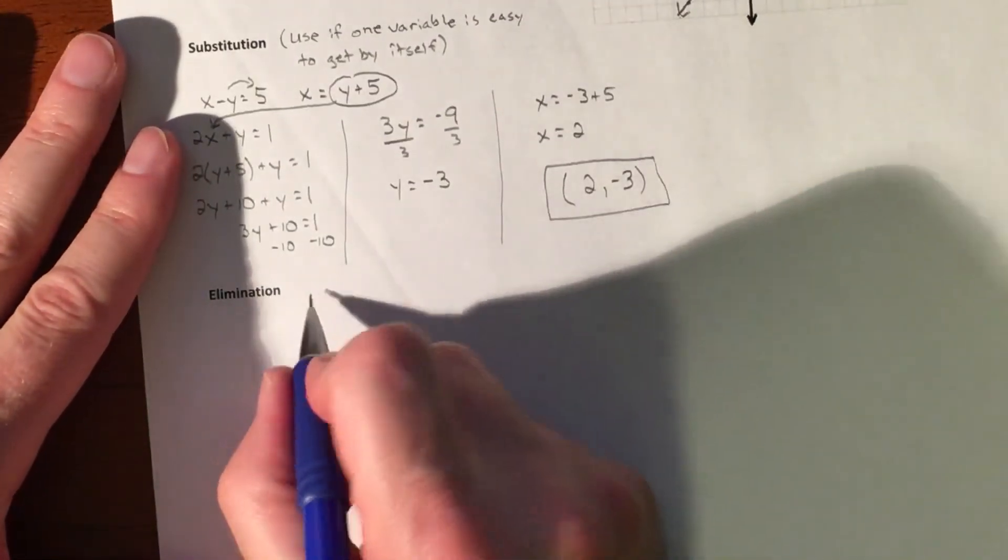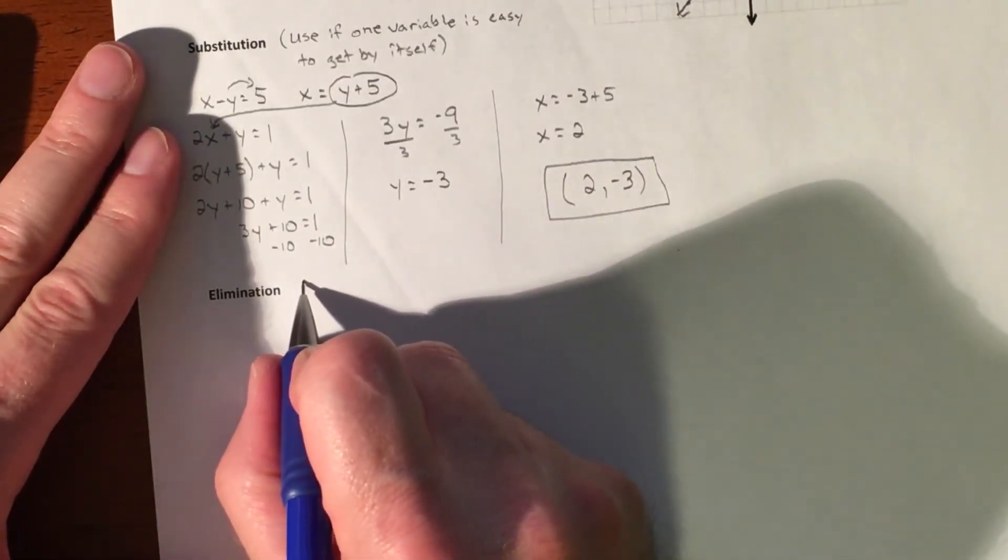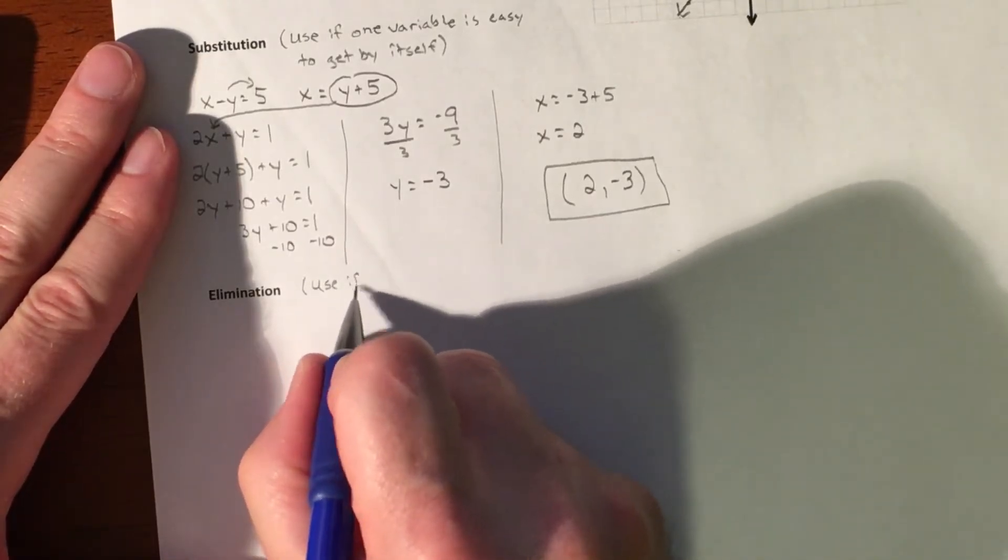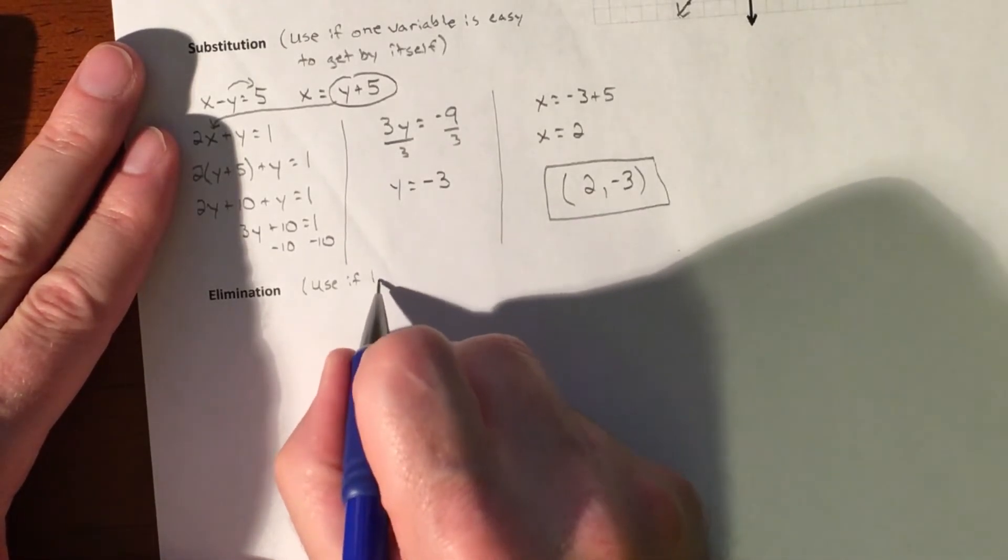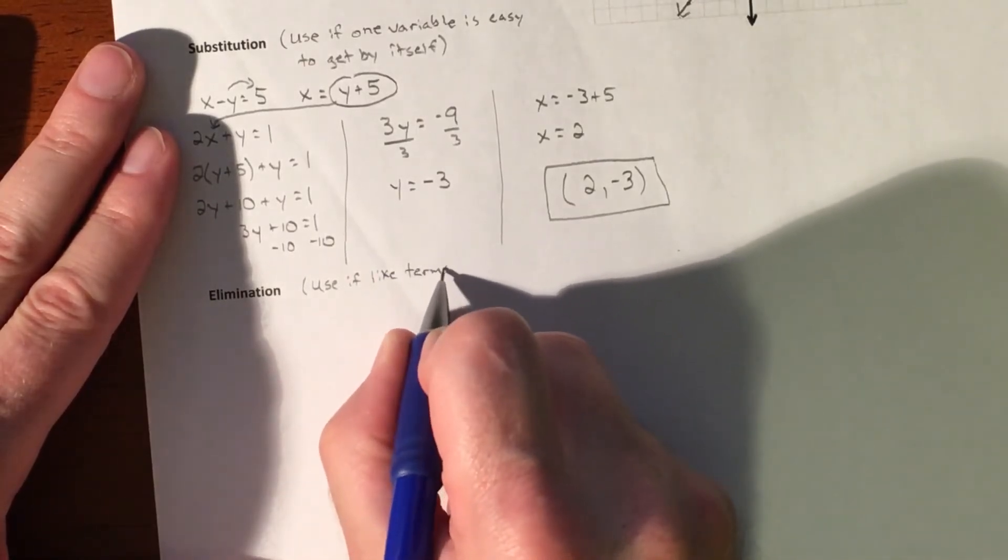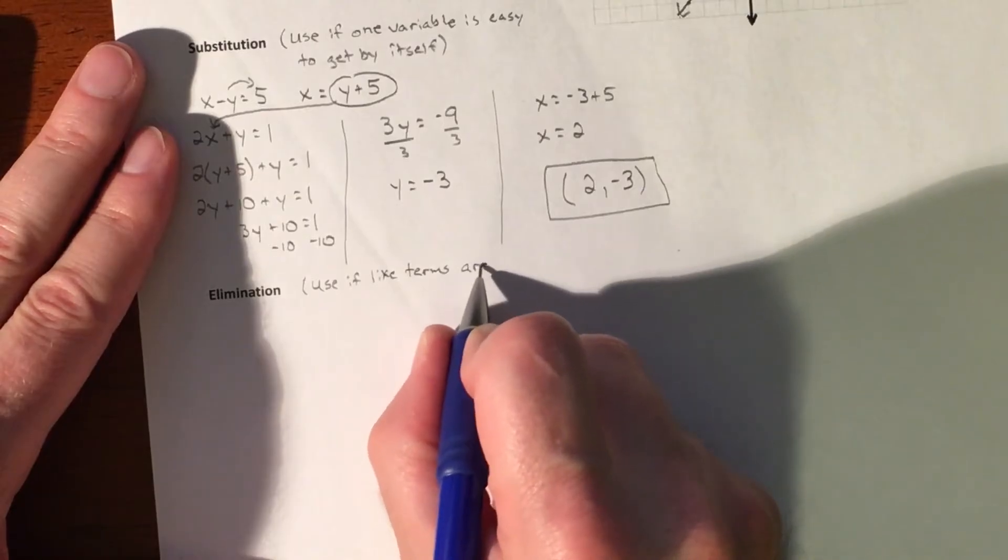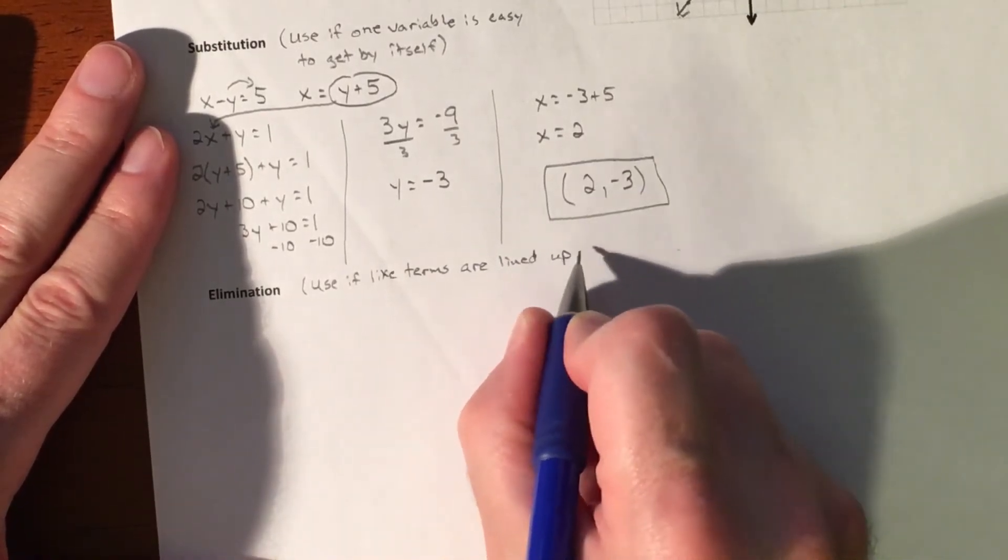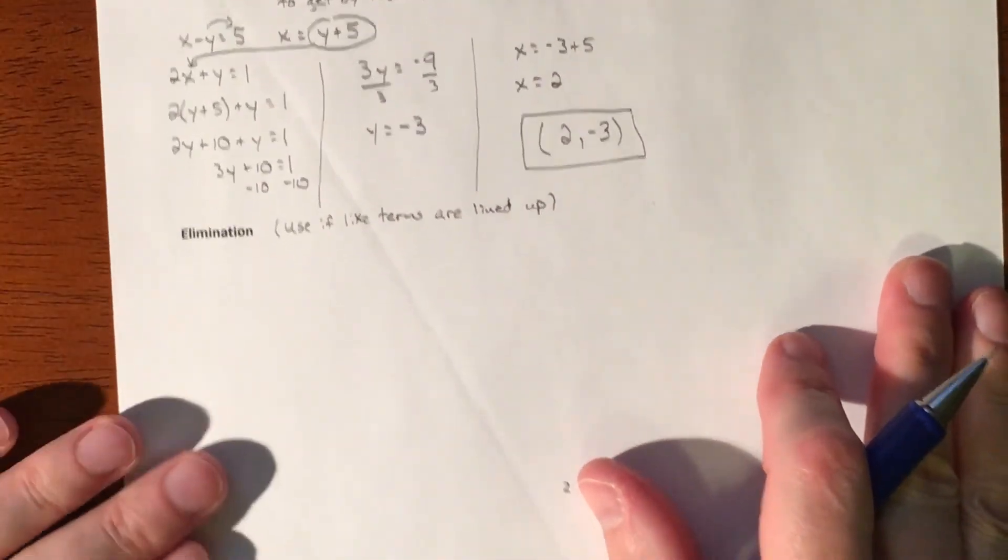Elimination. Last one. So we kind of use it if your like terms are lined up. Now, if they're not, you can make that happen. But this ends up being the method probably most people choose on most of the problems.